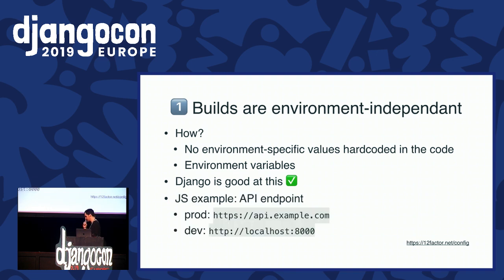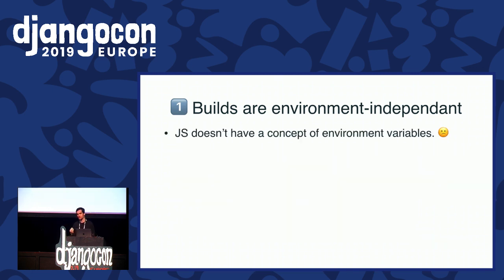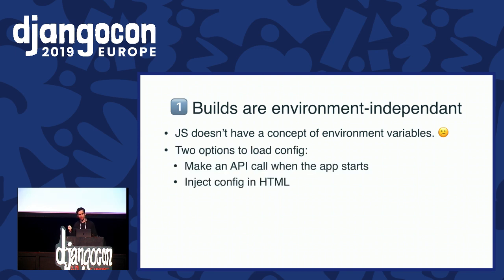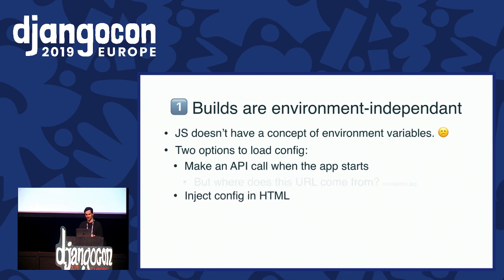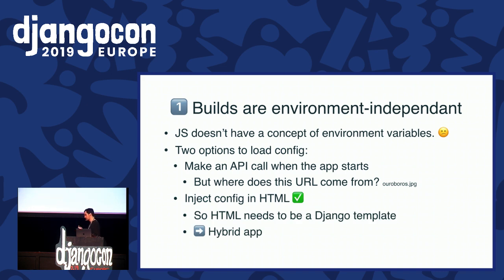But in JavaScript it's a bit of a different story. The main bit of config you will need in the JavaScript application is the API endpoint — where am I going to send my requests? In production I may want to connect to api.example.com over HTTPS, while in development I'm going to connect to localhost on port 8000 over HTTP. JavaScript doesn't have a concept of environment variables — we can't set environment variables in our users' browsers. So as far as I can tell that leaves us with two options: either we find a way to load the config when the application starts from somewhere, which probably means an API call — but if we're making an API call, to what endpoint? That's kind of a snake eating its own tail.